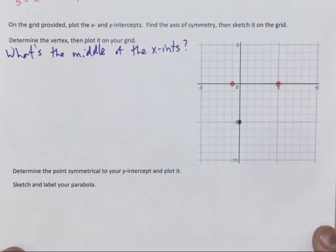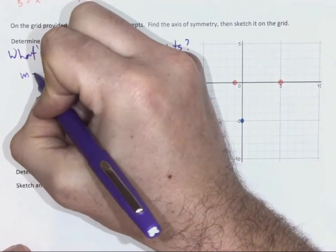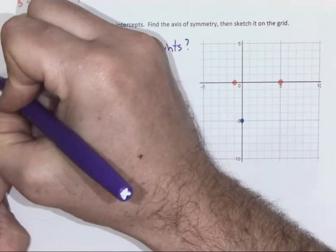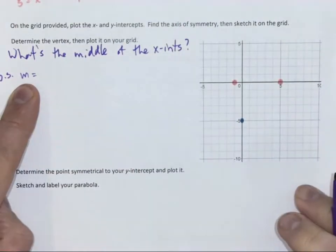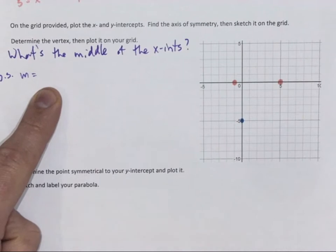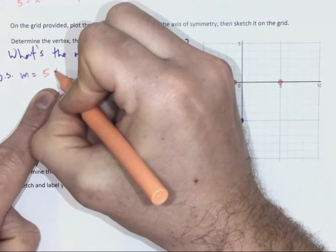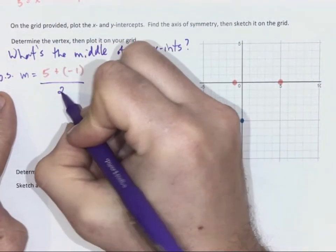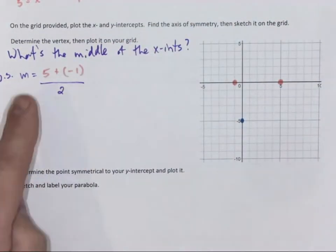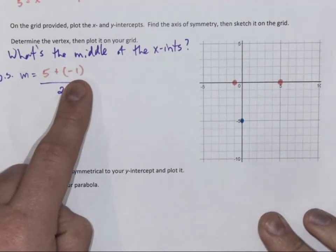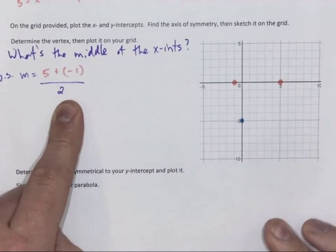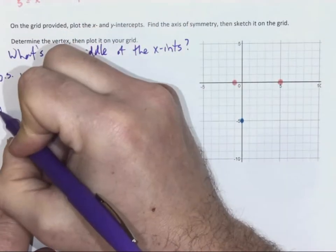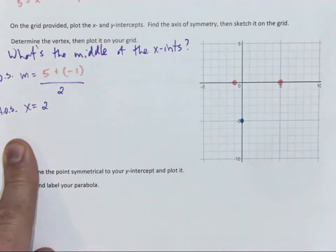So to find the middle of the x-intercepts, I might actually use part of my midpoint formula. So the middle, or the axis of symmetry, is going to be my two x-intercepts added together. 5 plus negative 1, all divided by 2, because I want to know what's in the middle. 5 plus negative 1 is just 4, divided by 2 is 2. So my axis of symmetry is an equation, x equals 2.